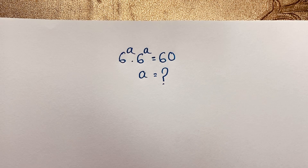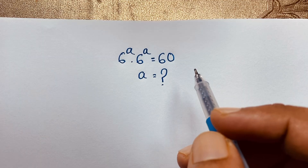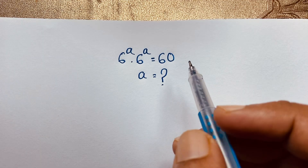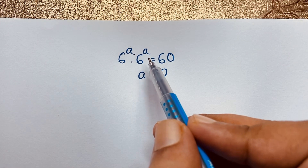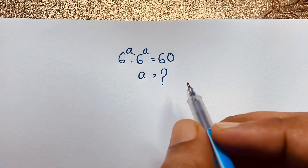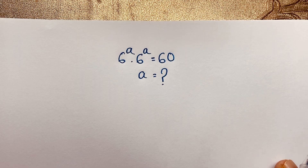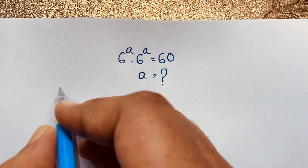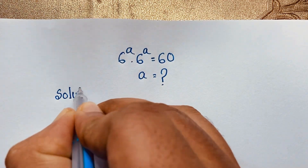Hello everyone, welcome to Rasha's classroom. Today we are solving an interesting maths Olympiad question which is 6 to the power a times 6 to the power a is equal to 60. A is equal to what? How to solve this interesting maths Olympiad question?